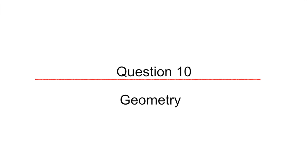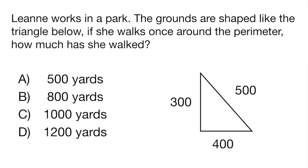Our final question, question 10, is a geometry problem. And this involves using perimeters. Okay, so the problem says Leanne works in a park. The grounds are shaped like the triangle below. If she walks once around the perimeter, how much has she walked? And they give you a triangle with the yards that she has to walk.